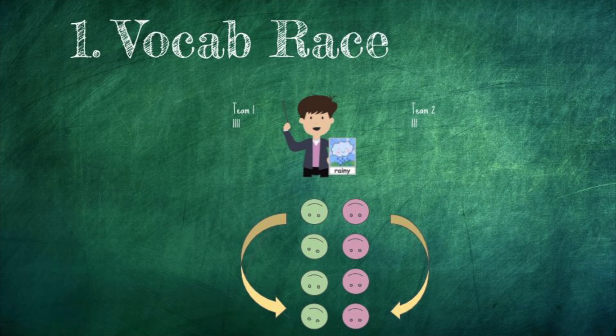Alright, so my first game is called Vocab Races. You're going to split your class into two teams and have them in two single file lines facing you. You're going to have a stack of flashcards and you're going to show the first two students the first flashcard. Whoever says it correctly gets a point for their team and then they go to the back of the line and the next two students come up. I love this game because it's a really great way to review vocabulary and it works really well with young elementary students.